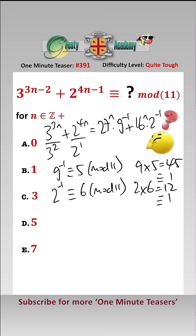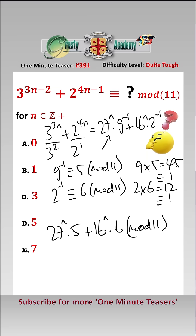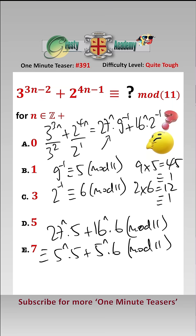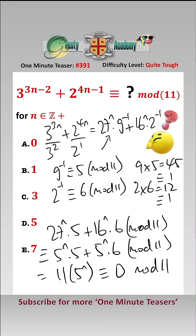So we can rewrite this now as 27 to the power of n times 5, add 16 to the power of n times 6 mod 11. And that equals 5 to the power of n times 5, add 5 to the power of n times 6 mod 11, which equals 11 times 5 to the power of n, which equals 0 mod 11 — which is answer a.